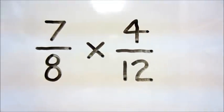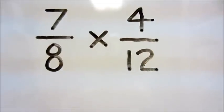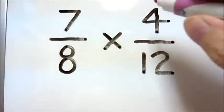When we cross-cancel, we need a multiplication or division fraction problem, such as 7/8 times 4/12.